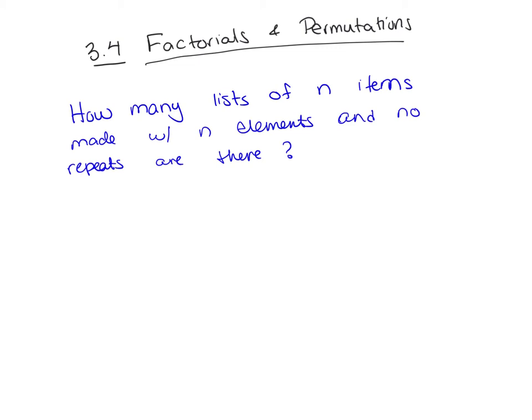In section 3.4, we're going to talk about factorials and permutations. So how many lists of n items are there if it's made with n elements and there's no repeats? That's our first question.